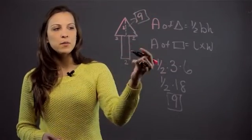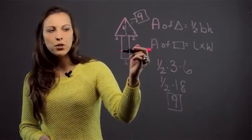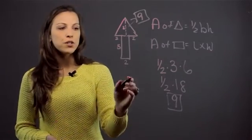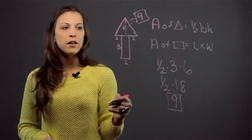Now for the rectangle, I need to do length times width. I also need to know this portion. If this was given to us as five, we just do two times five, and we get ten.